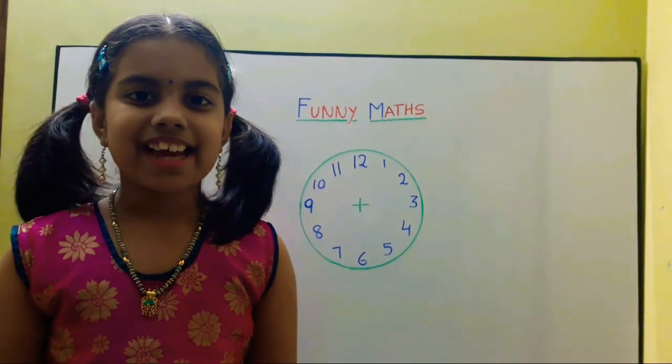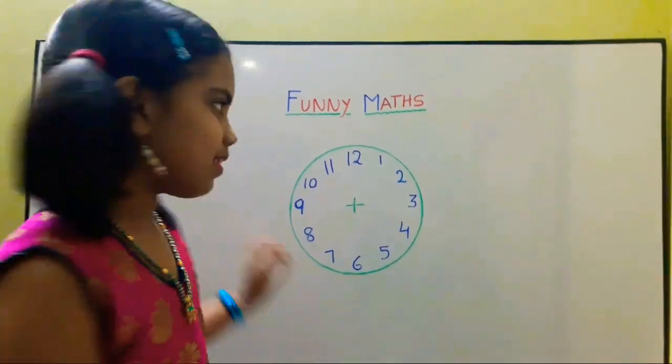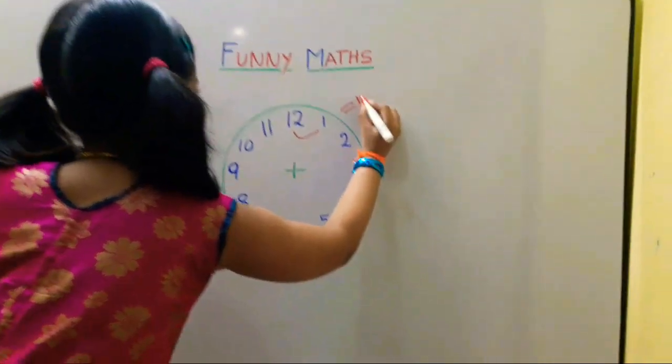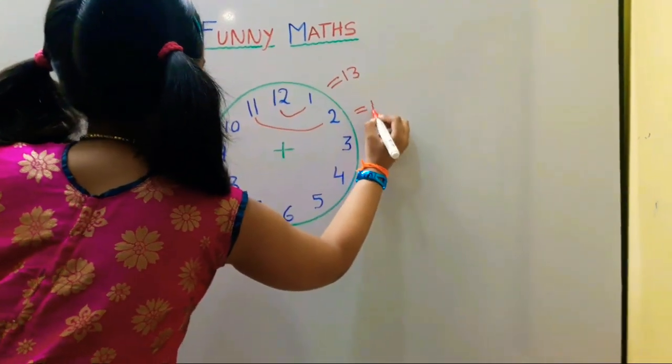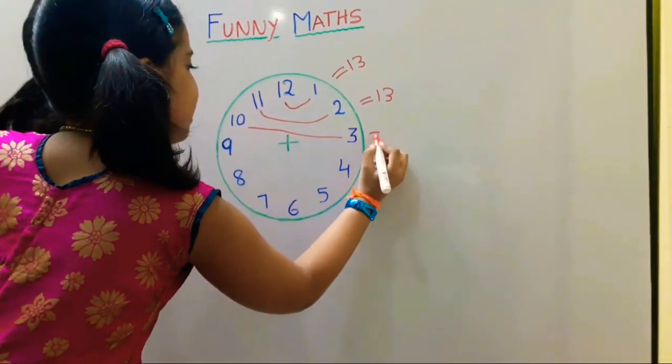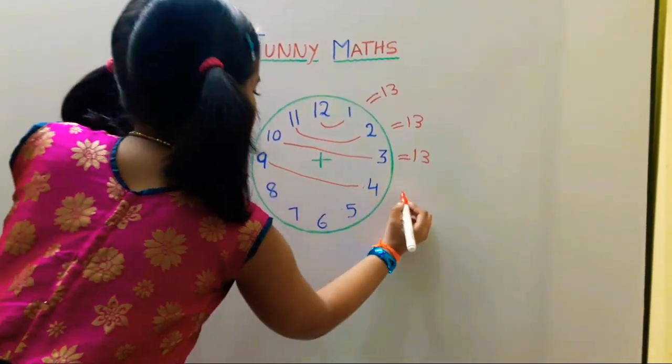10 plus 3 is equal to 13. 9 plus 4 is equal to 13.